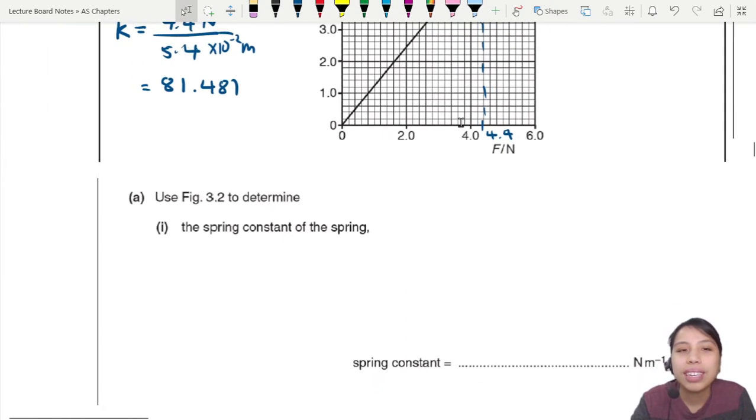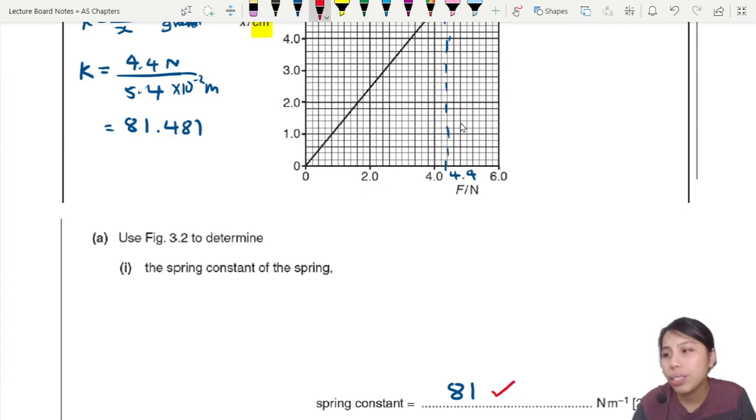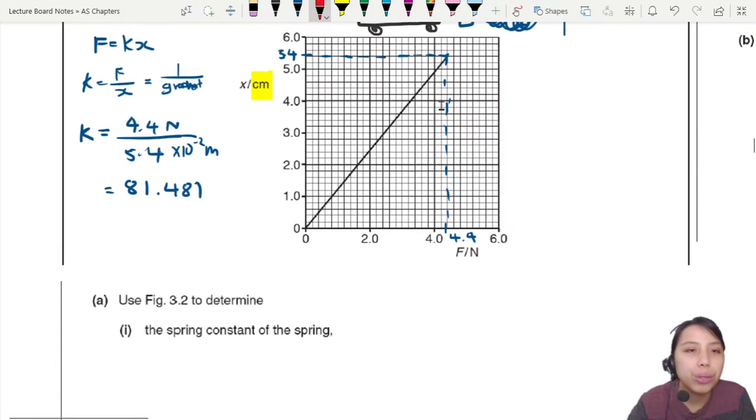So 81 will be our answer. This is a two-marker question - one mark usually comes from the final answer, and the other comes from knowing how to use Hooke's law, whether in the gradient, one over gradient, or k = F/x. That also works.